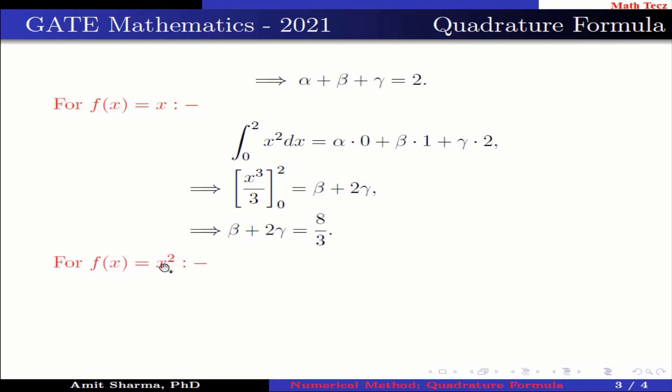For f(x) = x², we have integration from 0 to 2, x³ dx equals α times 0 plus β times 1 plus γ times 4. Here, f(0) is 0, f(1) is 1, and f(2) is 4.